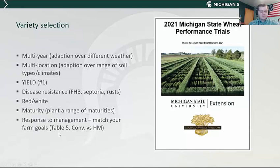In table five, we have response to management. Different varieties respond differently to management. If you're a grower that wants to put your nitrogen on and doesn't necessarily want to apply fungicides, you want to choose varieties that do well under conventional management. If you want to push yields higher and apply fungicides, pick varieties that do well under high management. There are varieties that do well under both systems, but they're not the same varieties. Select a variety that matches your management style.